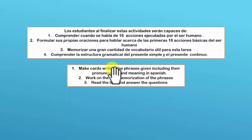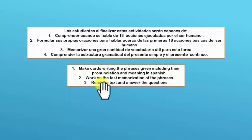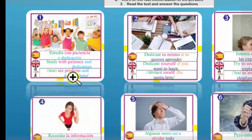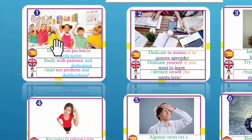Aquí la actividad dice: Make cards writing the phrases given, including their pronunciation and meaning in Spanish. Haz tarjetas escribiendo las frases dadas, incluyendo su pronunciación y significado en español. Number 2: Work on the fast memorization of the phrases. Trabaja en la rápida memorización de las frases. And finally: Read the text and answer the questions.